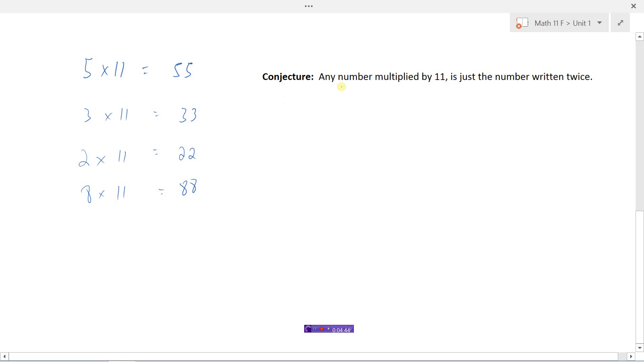So here's my conjecture. Any number multiplied by 11 is just the number written twice. 5, 5, 5. 3 times 11? 3, 3. 7 times 11? 7, 7. But I've been just doing single digits here.